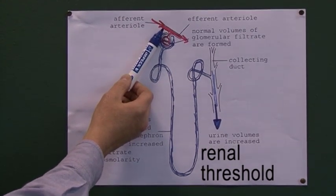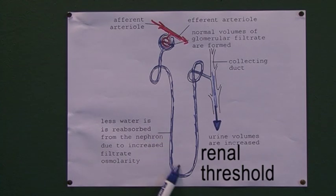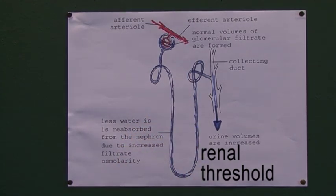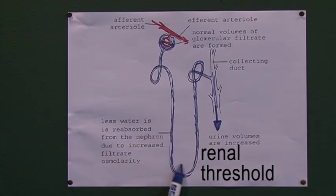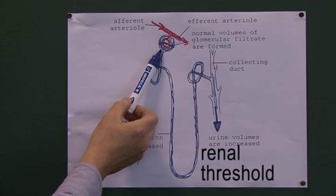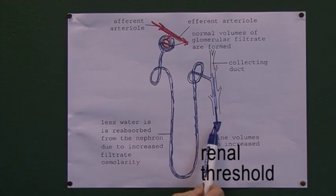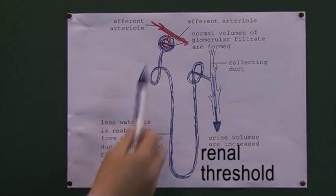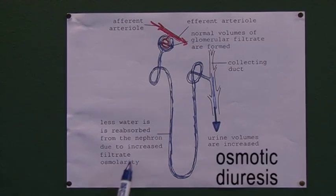We can use this diagram to explain the concept of renal threshold. If more than 11 millimoles of glucose is present in the blood, there's going to be more than 11 millimoles in the glomerular filtrate, but the maximum amount the entire nephron can reabsorb is 11 millimoles. Therefore, if there's more than 11 millimoles in the filtrate, it can't all be reabsorbed and you'll have a glucosuria. If there's less than 11 millimoles in the blood, it can all be reabsorbed and there will be no glucosuria. Any glucose in urine is abnormal and we should suspect diabetes.